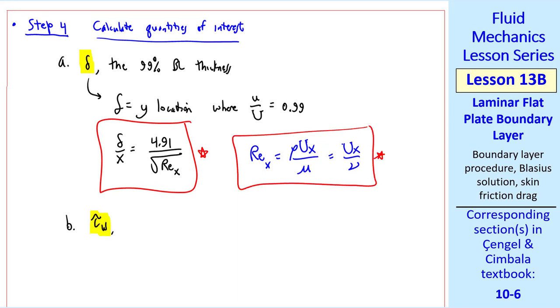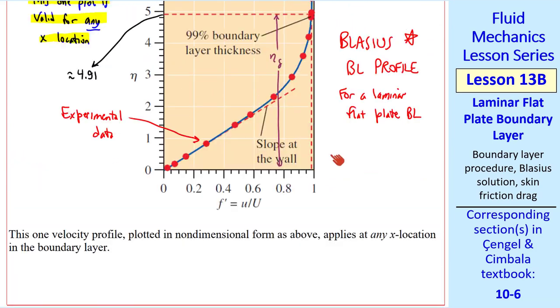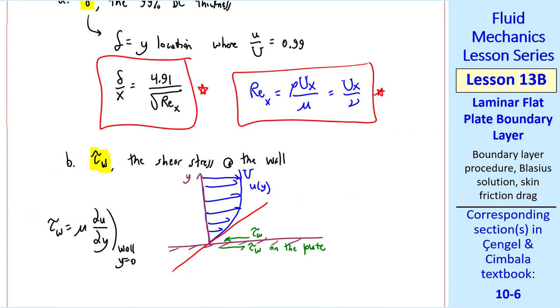Next, we'll calculate tau w, the shear stress at the wall. The shear stress on the fluid is tau w to the left. The shear stress on the plate is to the right. Because of friction, the flow is trying to drag the plate to the right. From the flow's point of view, the plate is slowing the flow down, which is why we have a boundary layer in the first place. We calculate tau w by taking the slope, since tau w is defined as mu del U del Y at the wall, or at Y equals 0. Again, we have to do a little bit of math, where we get the slope in our non-dimensional variables, and then go back to dimensional variables.